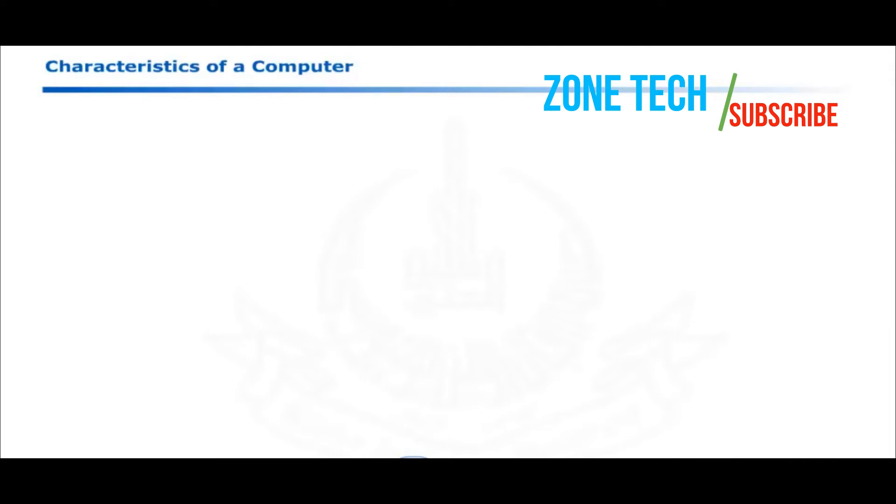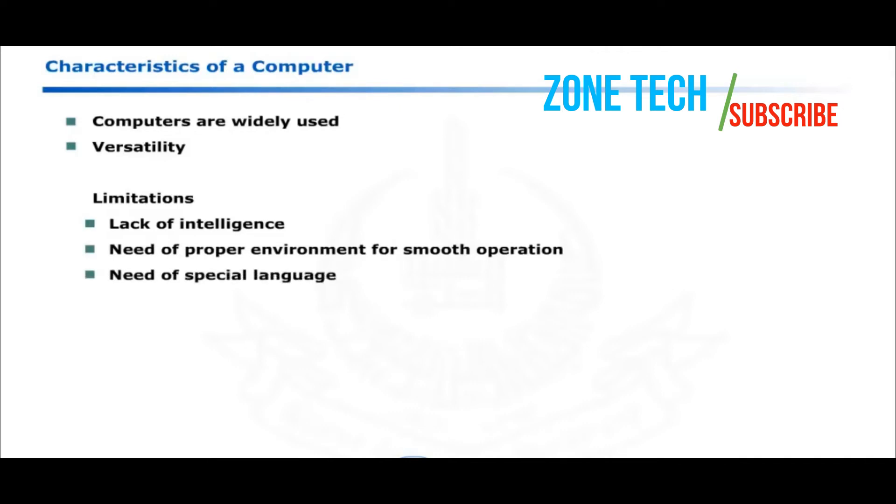Dear learners, although computers are widely used due to their versatility, but computers have certain limitations. Some limitations of computers are lack of intelligence, need of proper environment for smooth operation and need of special language. The first limitation of computer is its lack of intelligence. Although a computer can perform logical operations at a very fast speed, but it is unable to think like a human.